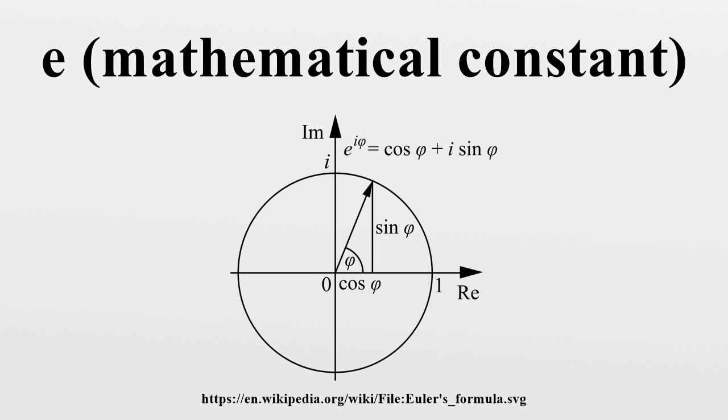The number e is also known as Napier's constant, but Euler's choice of the symbol e is said to have been retained in his honor.